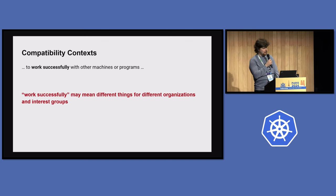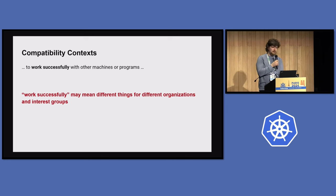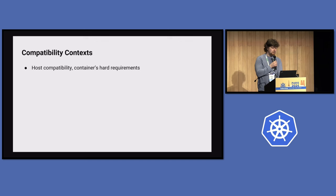Initially when we started this working group to determine image compatibility, I thought about it as a binary approach — zero or one, the container can fail or succeed on the node. But I was a little bit wrong because people came up with different approaches, and I arrived at the concept of 'compatibility context.'